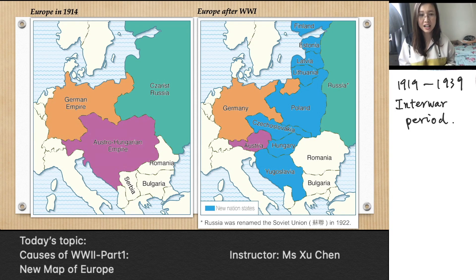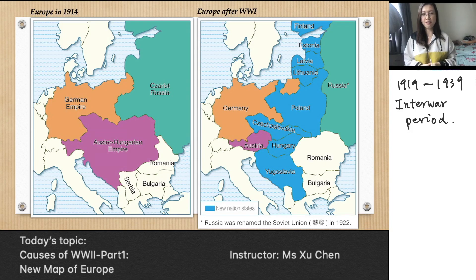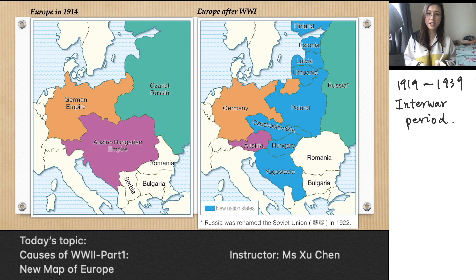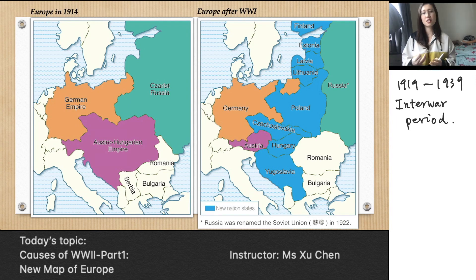The new nation-states include Finland, Estonia, Latvia, Lithuania, Poland, Czechoslovakia, Hungary, and Yugoslavia. I have two questions: first, why does Austria count as an old nation-state while Hungary counts as a new nation-state? Second, why were these nation-states able to gain independence — this is like the first time in history so many small and new nation-states formed at the same time.